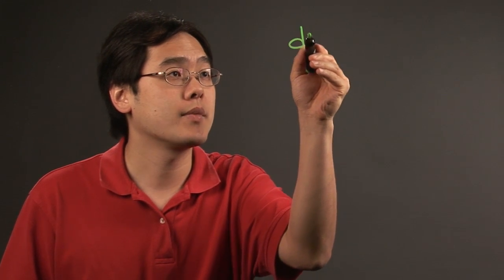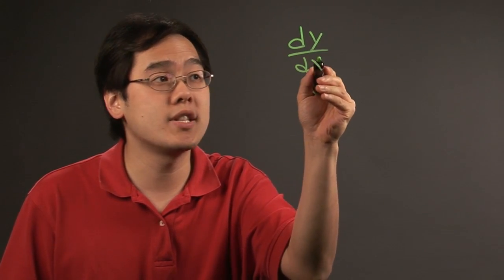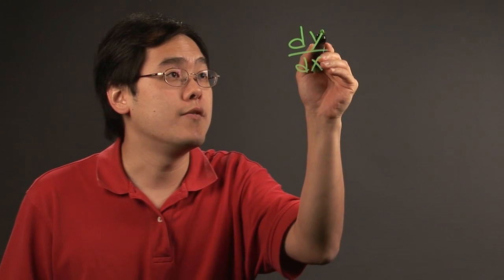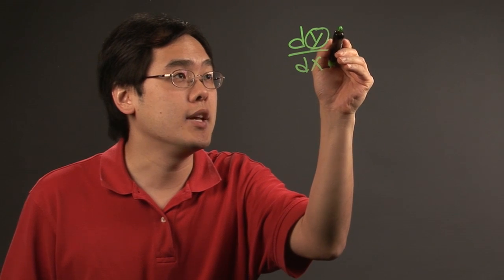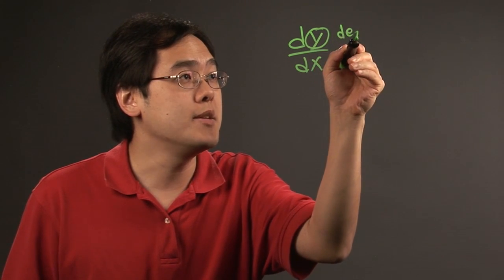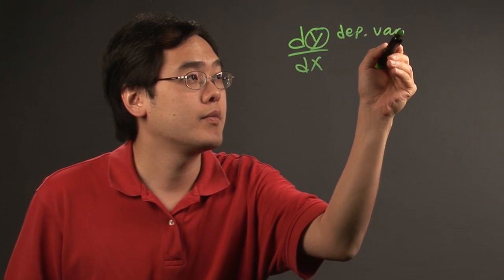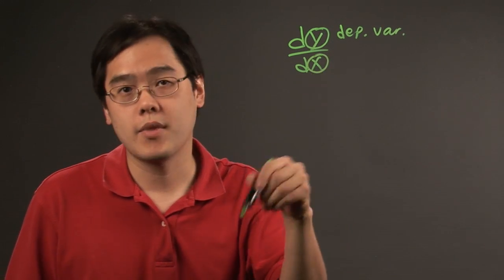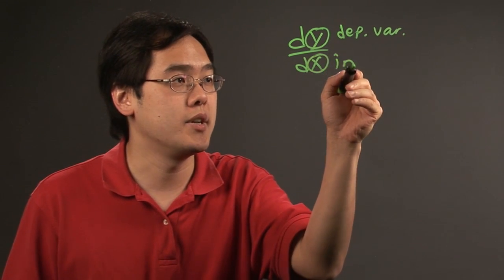when you have dy/dx, I'm just using this as an illustration. The variable in the numerator ends up being the dependent variable, and the denominator variable that's being addressed is the independent variable.